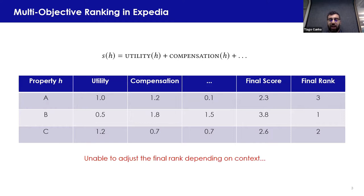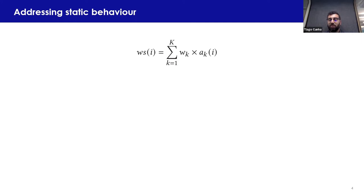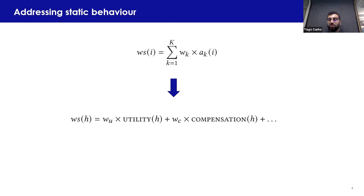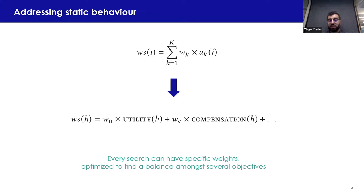One of the main problems is that we do not take into account the context. These adjustments are defined and tuned on a global basis, but they are suboptimal for different types of contexts. It makes sense to look at how we can go into more granularity. Looking at the literature, we found linear scalarization: we assign a weight to each adjustment or component and sum over all of them. This gives us a natural representation where we have a weight for utility, a weight for compensation, and the remaining adjustments — allowing specific weights for each search and optimization for several objectives.